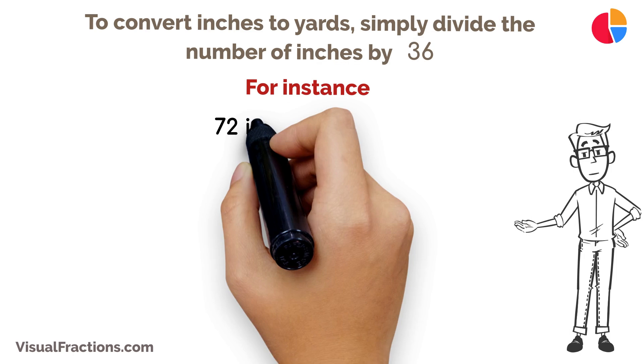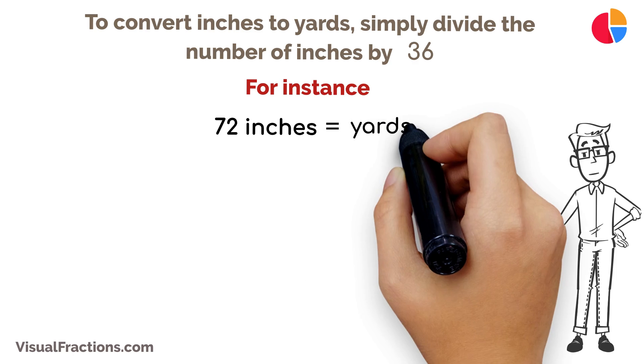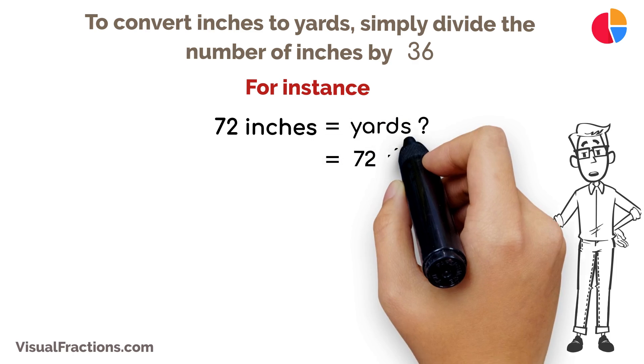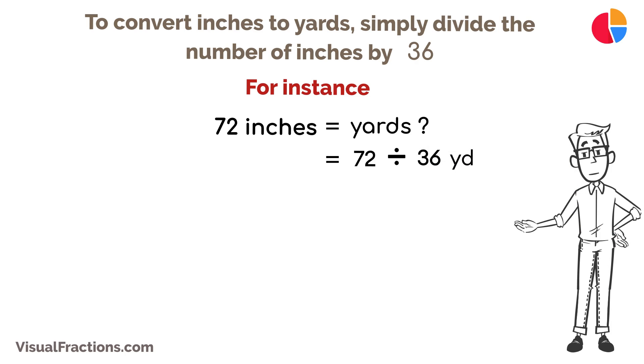For instance, if you have a length of 72 inches and you want to convert it into yards, divide 72 by 36. This calculation results in 2 yards.